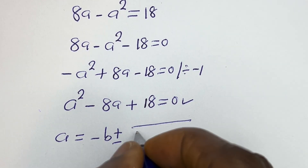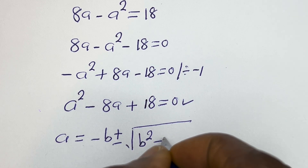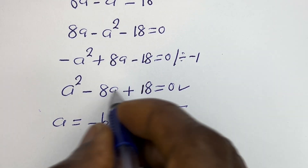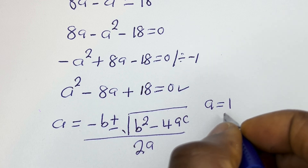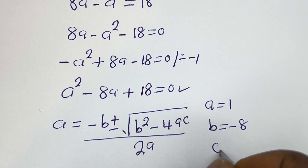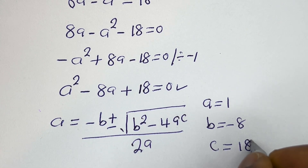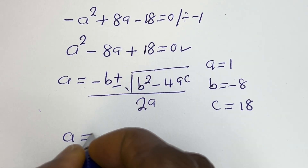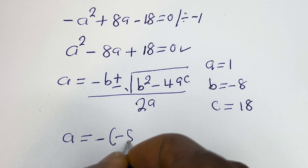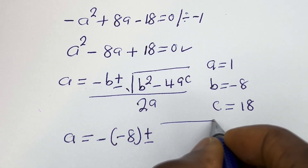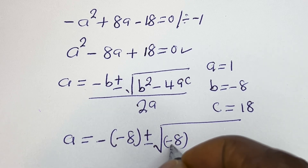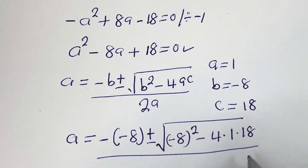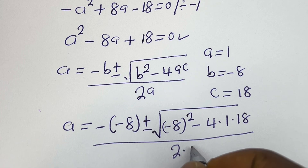a is equal to minus b plus or minus square root of b squared minus 4ac, all over 2a. From this quadratic equation, a equals 1, b equals minus 8, c equals 18. So we have a equals minus (minus 8) plus or minus square root of (minus 8) squared minus 4 times 1 times 18, all divided by 2 times 1.